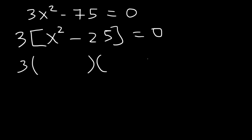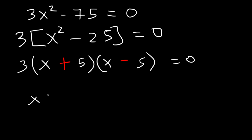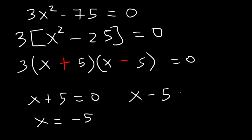The square root of x squared is x. The square root of 25 is 5. So it's going to be x plus 5 and x minus 5. So if we set x plus 5 equal to 0, we can clearly see that x will be equal to negative 5. And if we set x minus 5 equal to 0, x is equal to positive 5. And so that's it for that one.